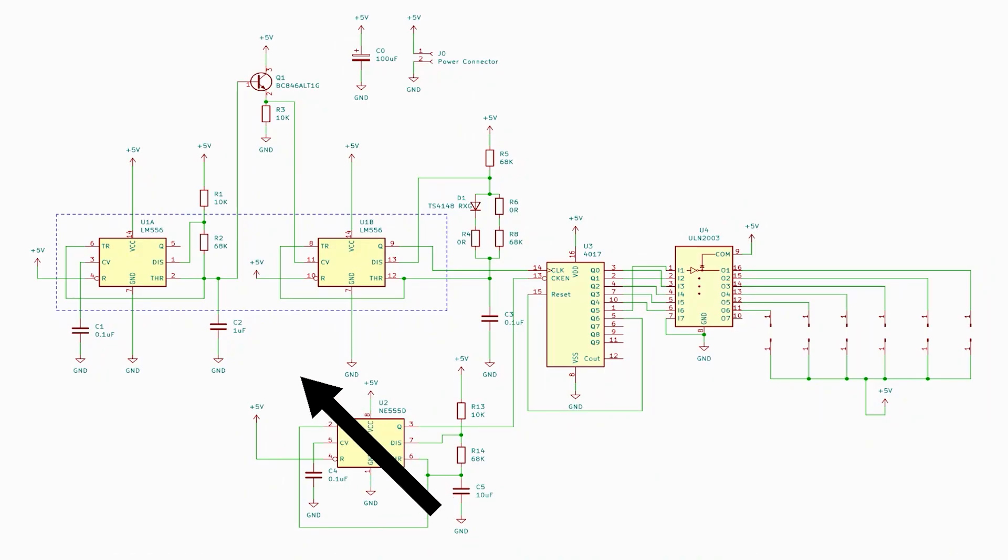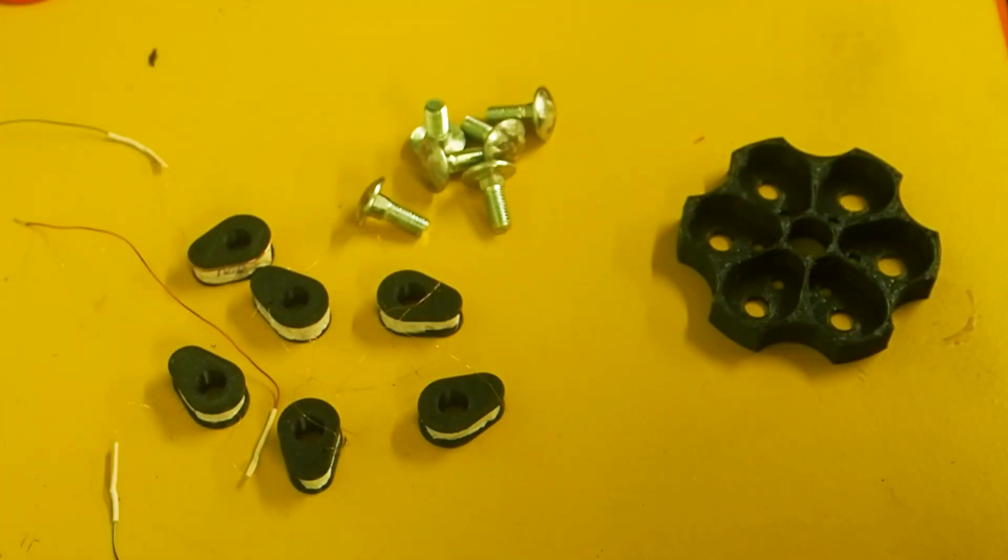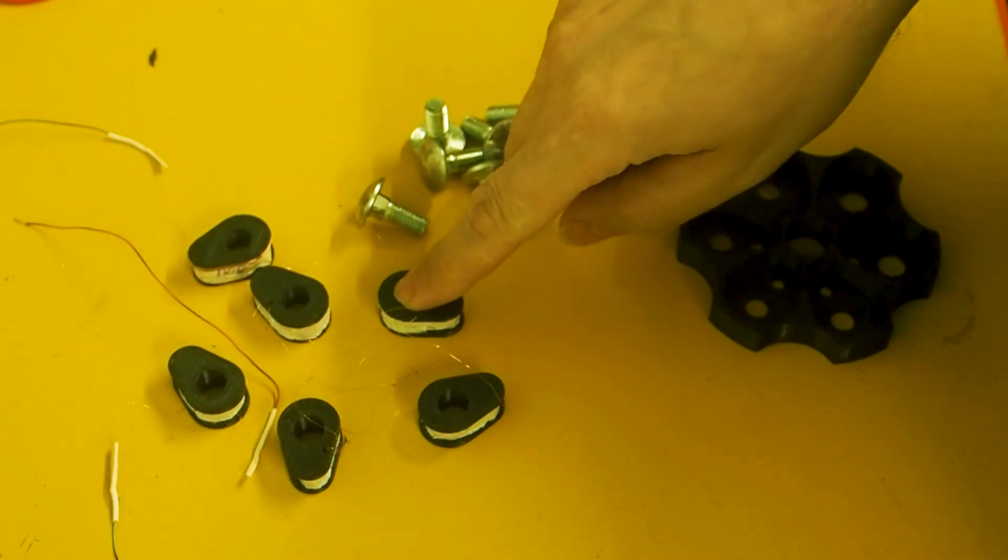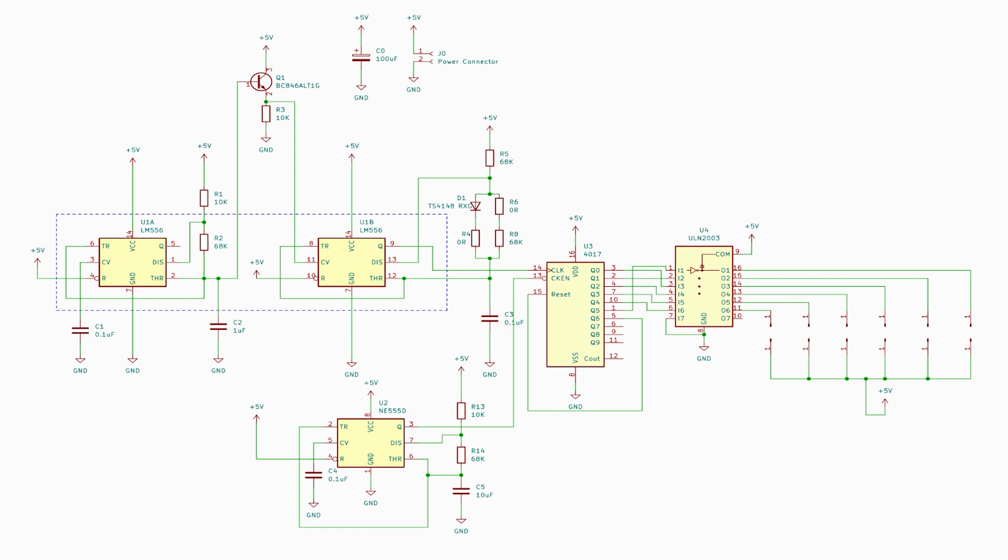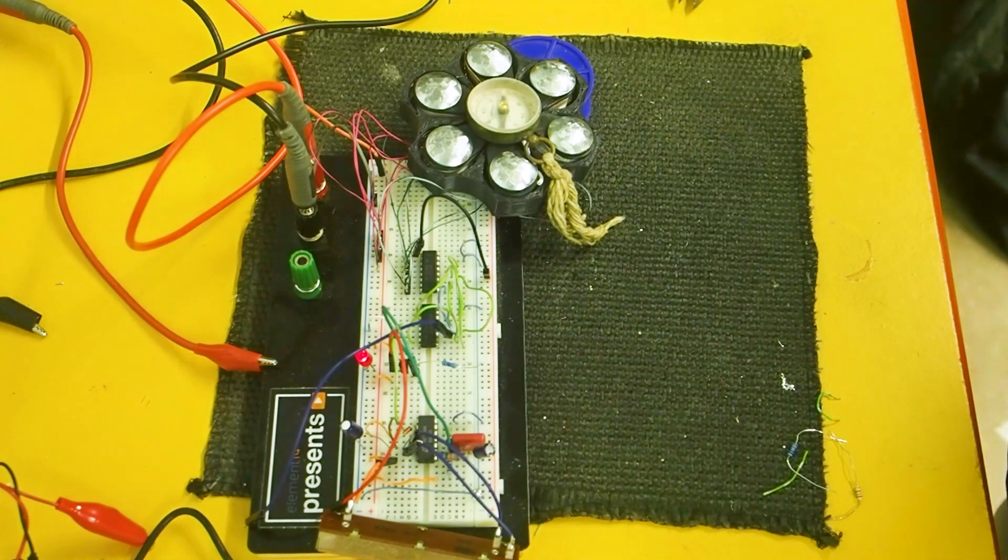We've got that dual 555 generating that jittery pulse sequence which leads into the 4017 decade counter and that gives us outputs that go high in turn. But we've got an extra chip this time. We've got a Darlington driver chip that allows us to control higher currents. I'm expecting the coils to take a reasonable amount of current because they're only 100 ohm resistance each. And that allows us to sequence through those coils in turn which should give us a rotating magnetic field and that in turn will drive our magnetic stirrer that we'll place in the potion.